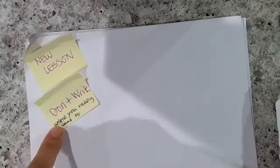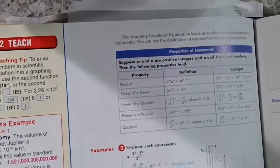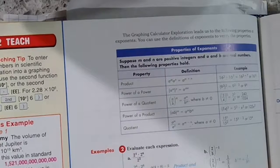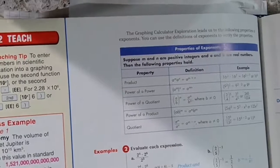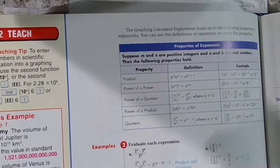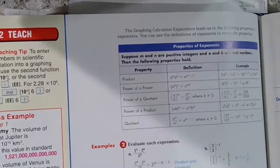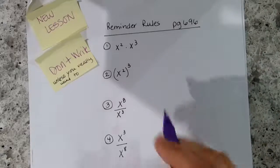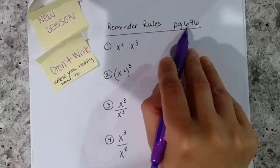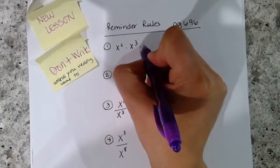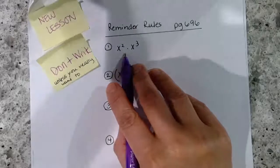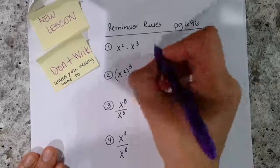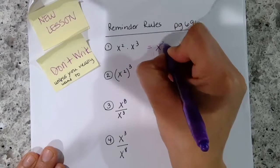All right, so today you're starting a new lesson. Don't write any of this yet until we actually start the notes. What you guys are going to go over today is just some basic properties of exponents. The unit isn't on exponents — it's on different kinds of sequences and series — but the first lesson has to do with using exponents. I'll quickly go through these; they are on page 696 in your book. This is going to be the product rule. You don't have to know the name, but you definitely have to know how to use it.